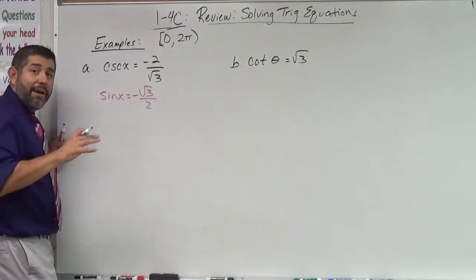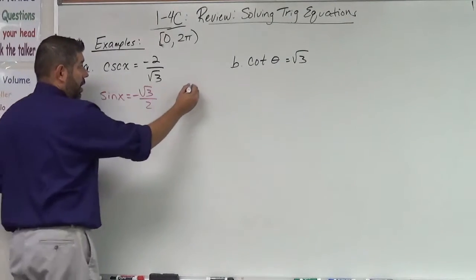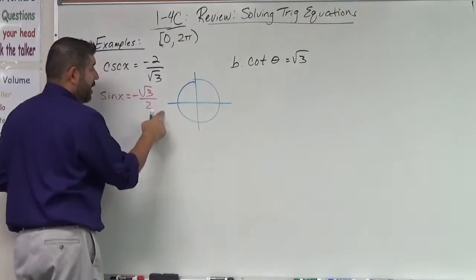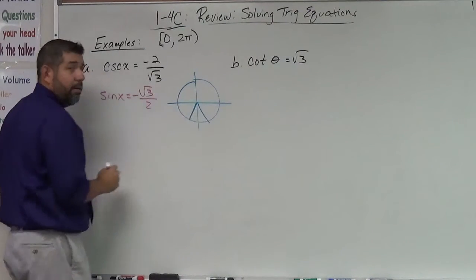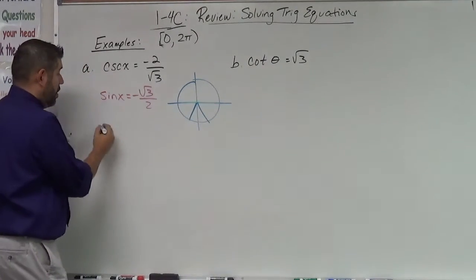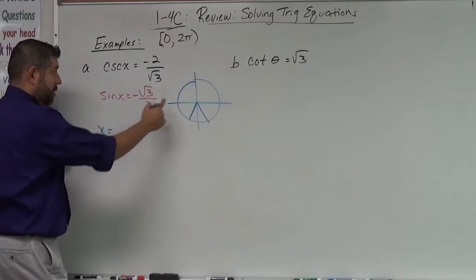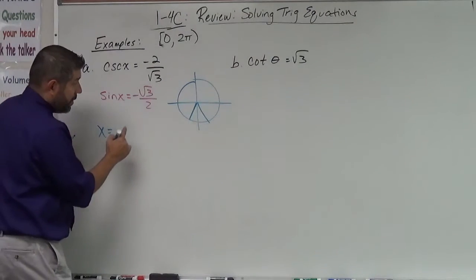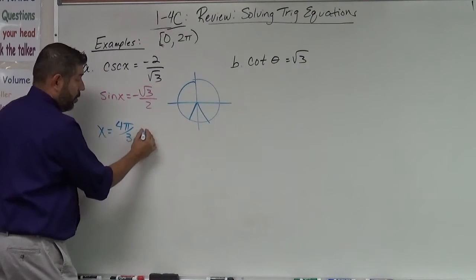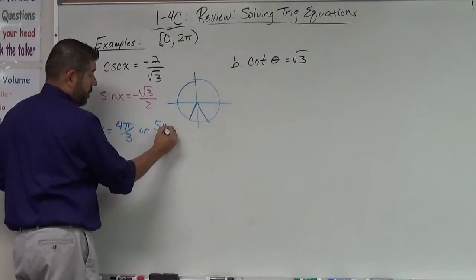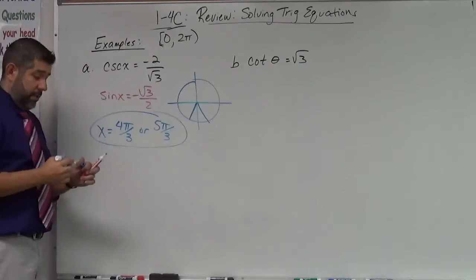Sine of x is the y value. So we're looking at the unit circle here. Where is the y value negative root three over two? That's going to be right here and right here. And those angles are when x is, that's going to be, I think that's three, four pi over three or five pi over three. And that's how you solve that one.